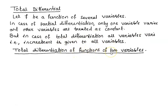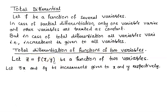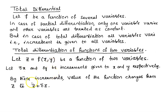Total differentiation of functions of two variables. Let z be a function of two variables x and y. Let delta x and delta y be the increments given to x and y respectively. By these increments the value of the function changes from z to delta z. That means initially we have z equal to f of x, y. If we give an increment to x and an increment to y, then x changes from x to x plus delta x and y changes from y to y plus delta y.